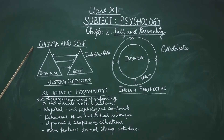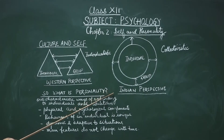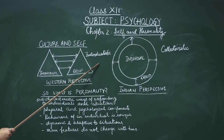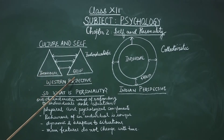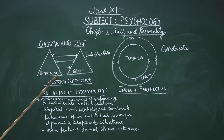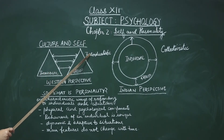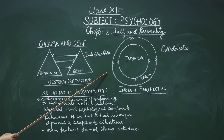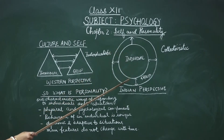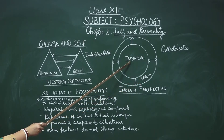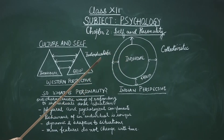Let us take up the concept of culture and self. There has been an analysis of self in both the Indian and Western perspectives. In the Western perspective, the individual and group are two separate entities with a very fixed boundary between self and others. In the Indian perspective, there is a shifting boundary and individual and group have a homogeneous coexistence — it is referred to as collectivistic.